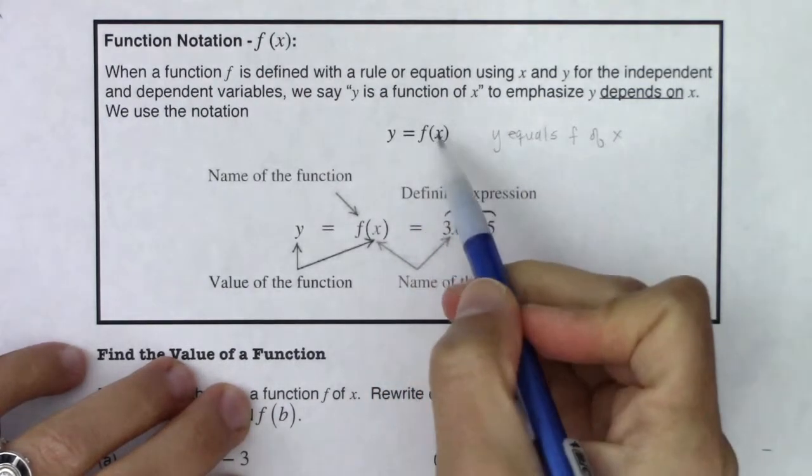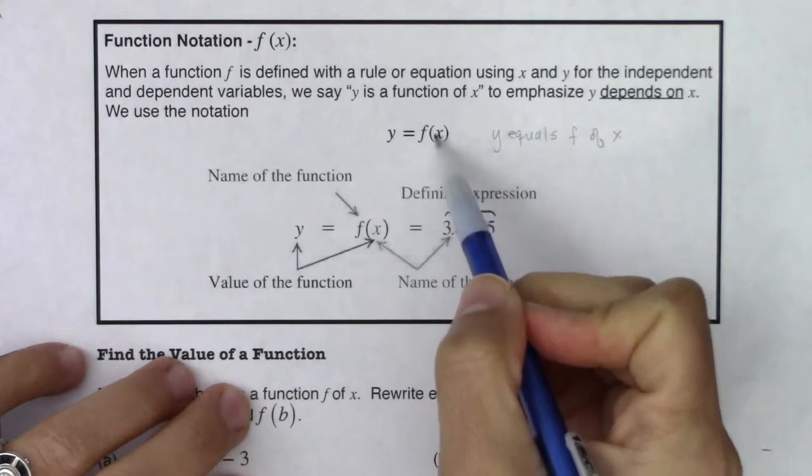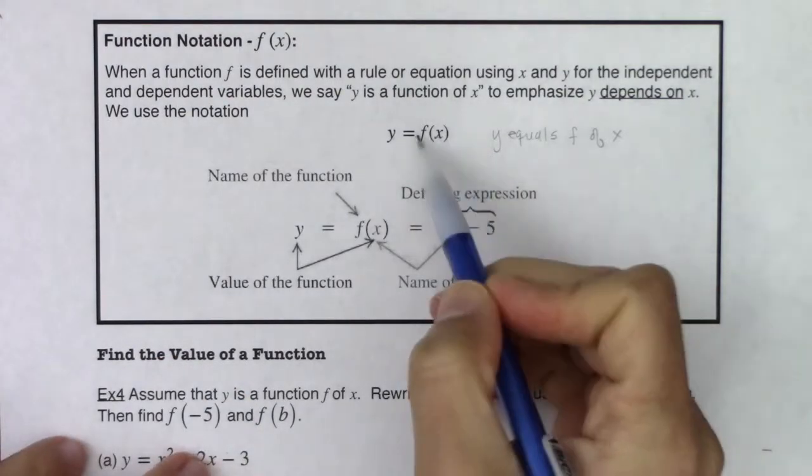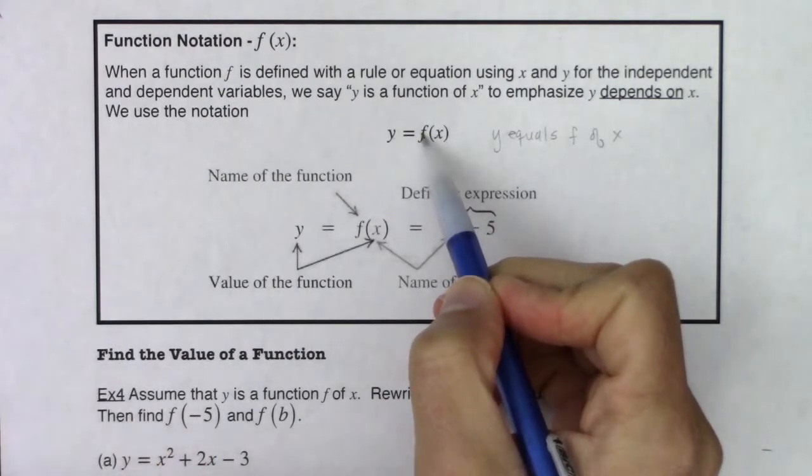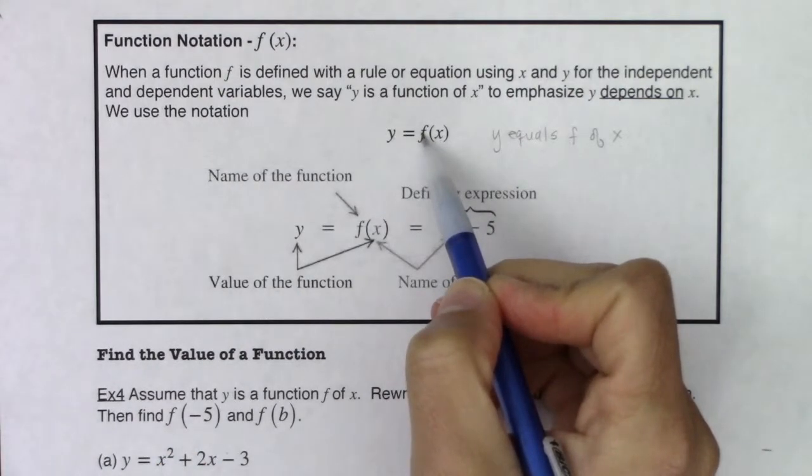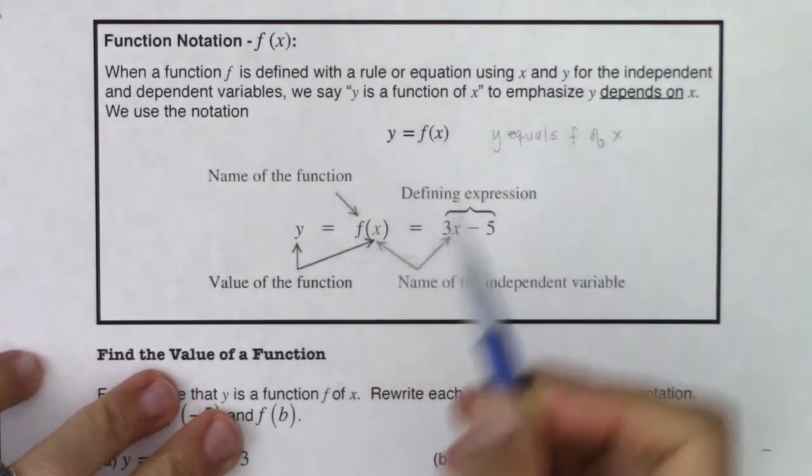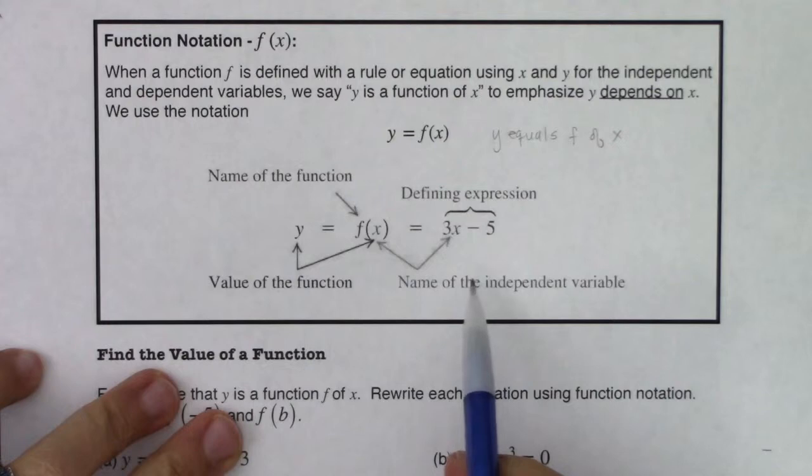This x is the name of our independent variable, the one that we usually pick or are given. This is just the name of our function, we'll use different letters f of x, g of x, h of x, and then this is the function value.